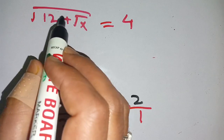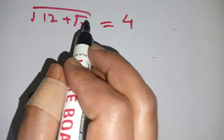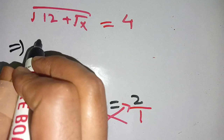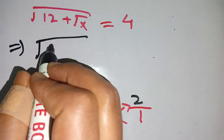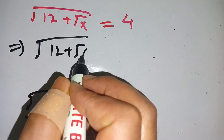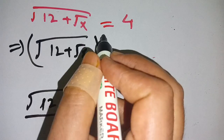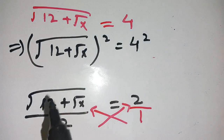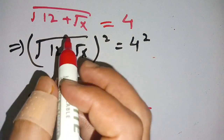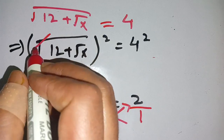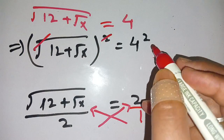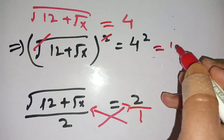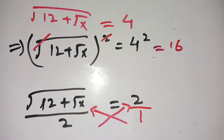Now to remove the square root, we square both sides. We get square root of 12 plus square root of x, whole squared, equals 4 squared. The square and square root cancel out, giving 12 plus square root of x equals 16.